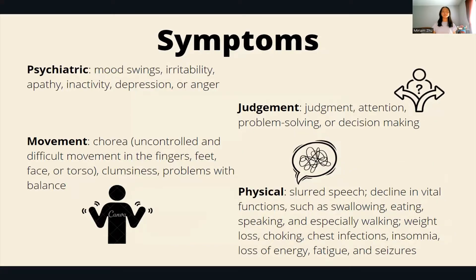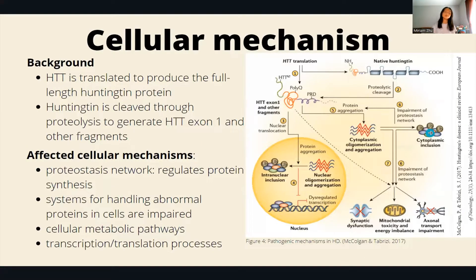Symptoms of Huntington's can appear in psychiatric, judgment, movement, and physical forms. The most prominent symptom is chorea — uncontrolled movement that can result in twitching. People then develop problems with thinking and judgment, and eventually, because the nervous system has broken down, they have trouble swallowing, eating, walking, and speaking. A combination of these symptoms results in critical care and leads to the eventual death of the individual.